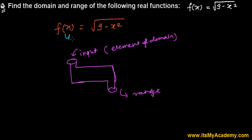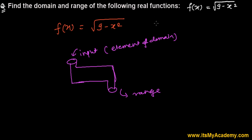Can I put 4? If I input 4, I get 9 minus 4² = 9 minus 16 = -7 inside the root. Negative 7 inside a square root is not possible. So any number greater than 3 is not possible.